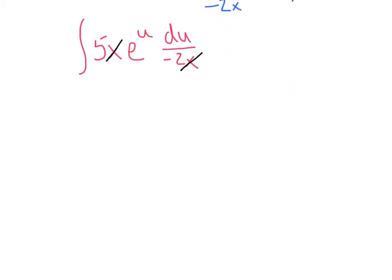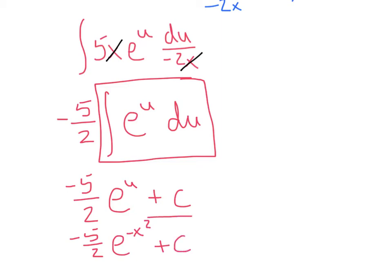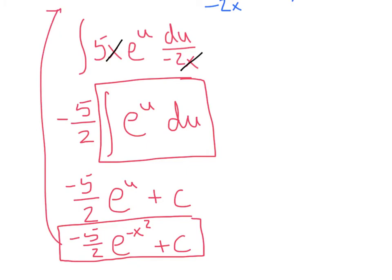Let's clean it up and pull out the coefficient. Good habits prevent careless mistakes. The antiderivative of e to the u is e to the u, and the coefficient comes along for the ride. Rewriting in terms of x, we get our final antiderivative. You could differentiate this expression to verify it gives back the original problem.